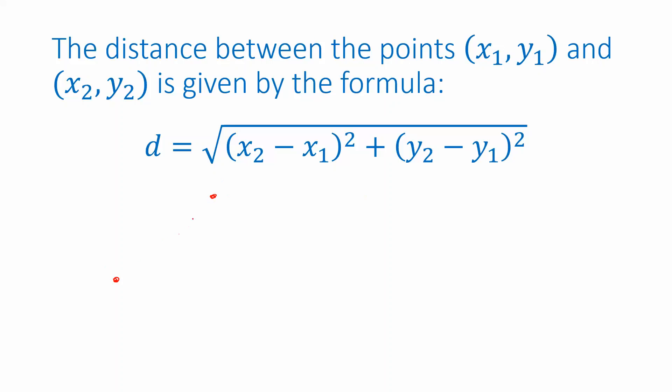If I want to find the distance between these two points, x1, y1 and x2, y2, the distance is just the length of the line segment that connects them, and we can think of that line segment as being the hypotenuse of a right triangle.